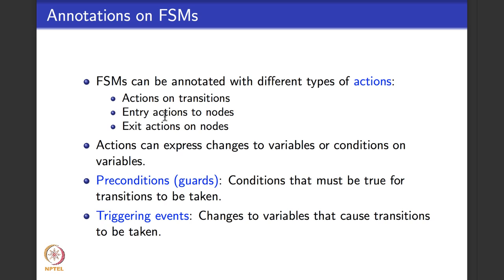Finite state machines can be annotated with different types of actions — actions on transitions, actions on nodes dictating when to enter a node, and actions on nodes dictating when to exit from a node. These actions represent change of values of variables and change of evaluation of conditions. As we saw in the elevator example, there could be preconditions associated with nodes telling you when to take a transition, and conditions or guards associated with edges telling you when to take a particular edge. So finite state machines are graphs but with a lot of extra add-on information.